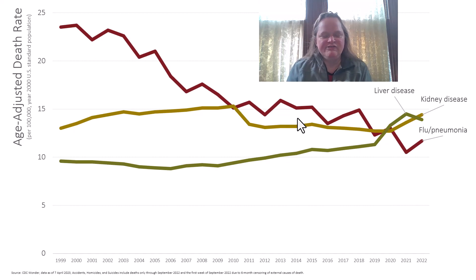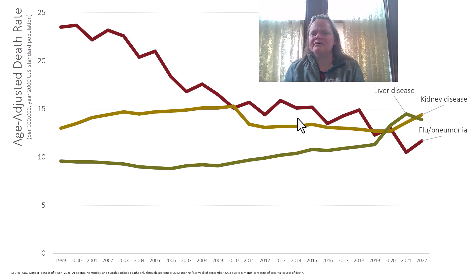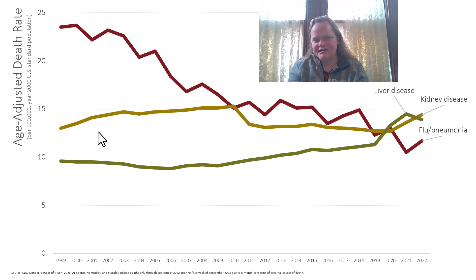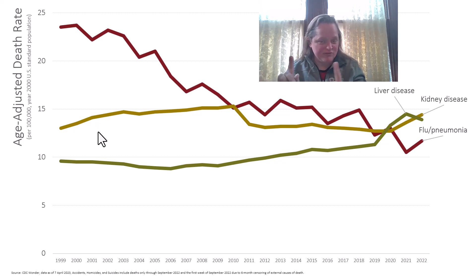I've plotted liver disease, kidney disease, and flu pneumonia together because they're in a similar order of magnitude and share some particular things. Liver disease and kidney disease have a similar troubling trend during the pandemic. With flu pneumonia, you might think something's going on in the pandemic, but you really need to step back and look at the bigger picture. The age-adjusted death rate is trying to capture the big trend, and breaking it down to different age groups will show us something different, which we'll address in later videos.